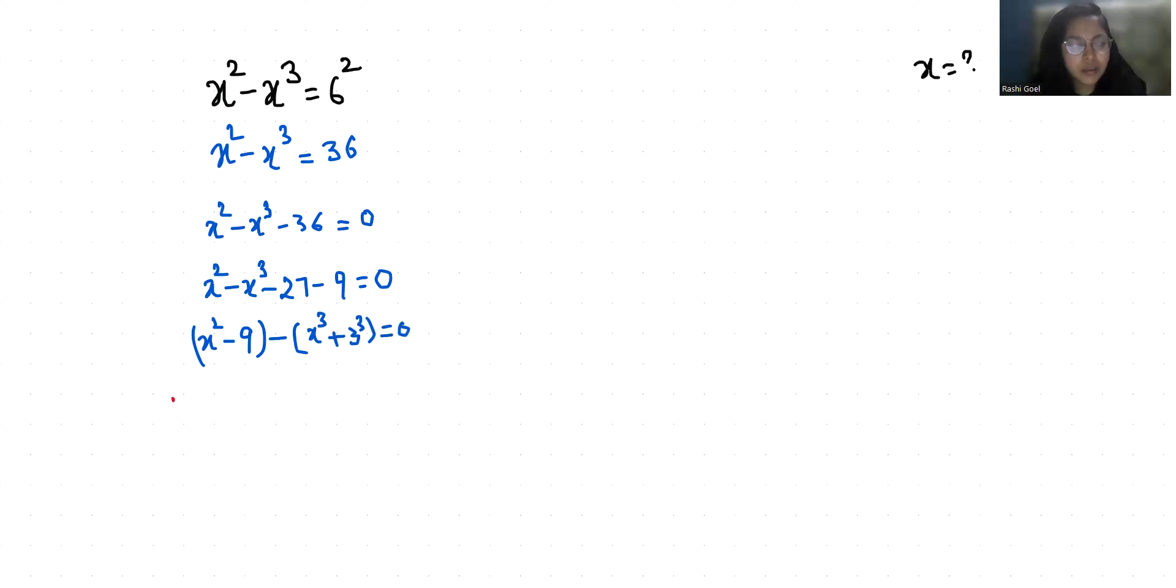a squared minus b squared equals a plus b times a minus b, and a cubed plus b cubed equals a plus b times a squared minus ab plus b squared.